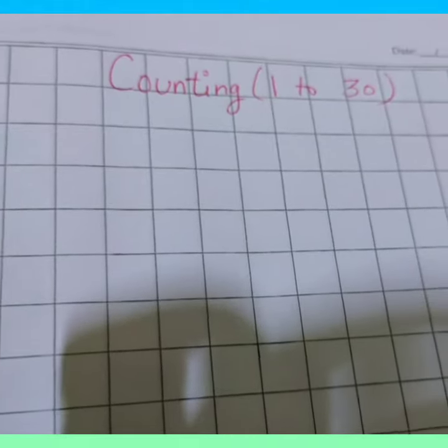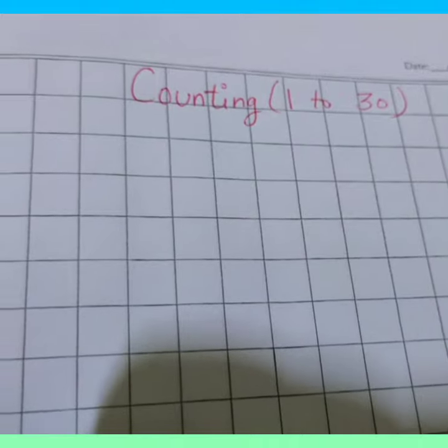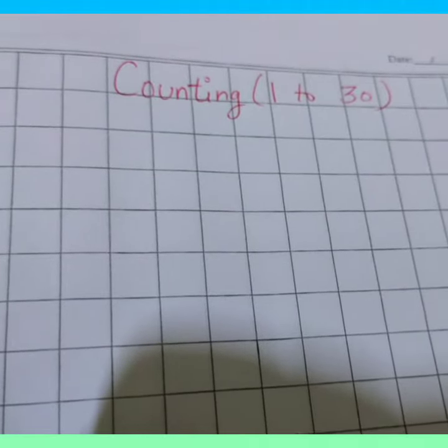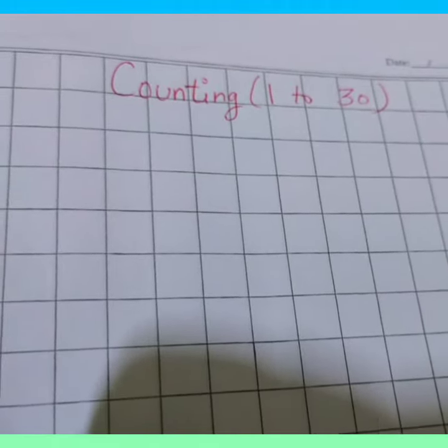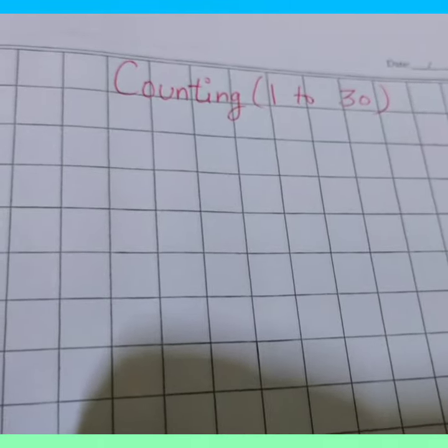Good morning, students. Yesterday we learned how to pronounce counting 21 to 50. Now today we will learn how to write counting 1 to 30 in your copy. Now let me start.